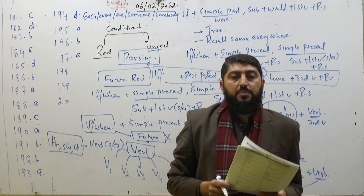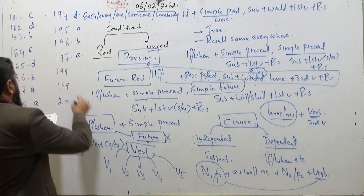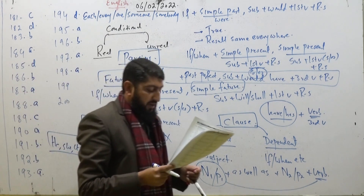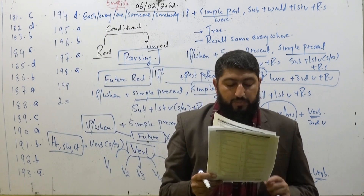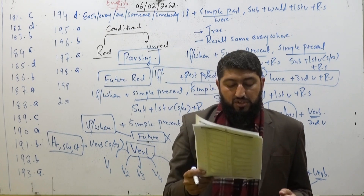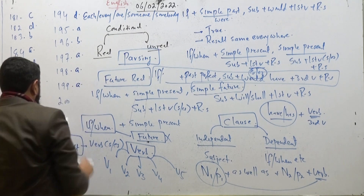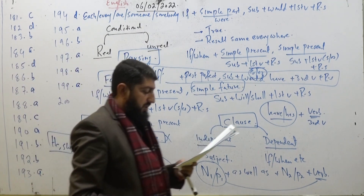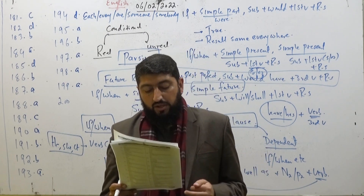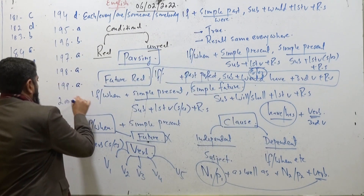MCQ 198: 'Murky' means vague or cloudy — option number A is correct. MCQ 199: Something that is strange or mysterious — option number A is correct. MCQ 200: 'Gratify' means to give satisfaction — option number A is the correct one.